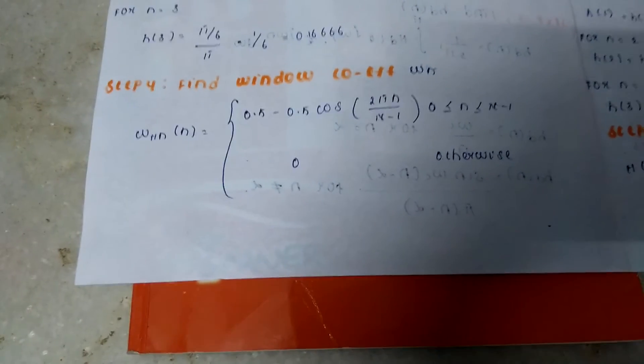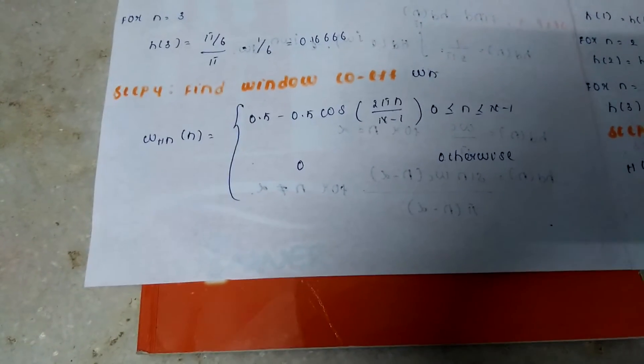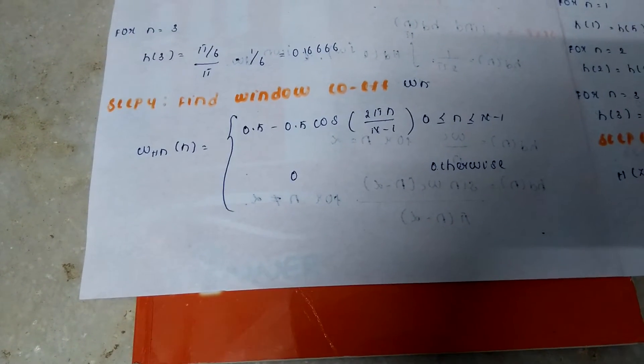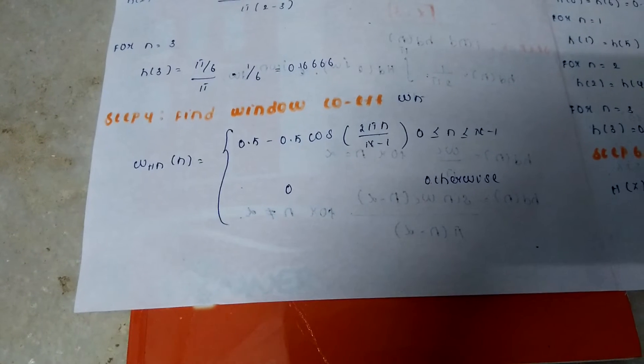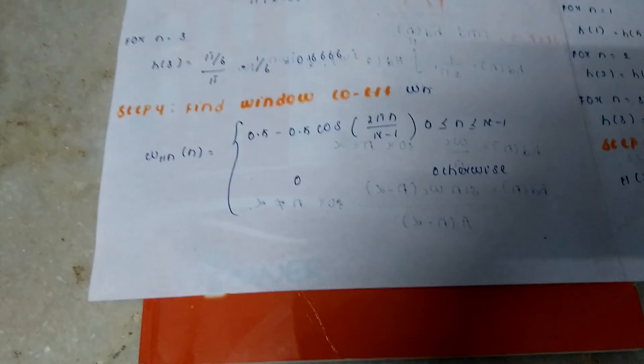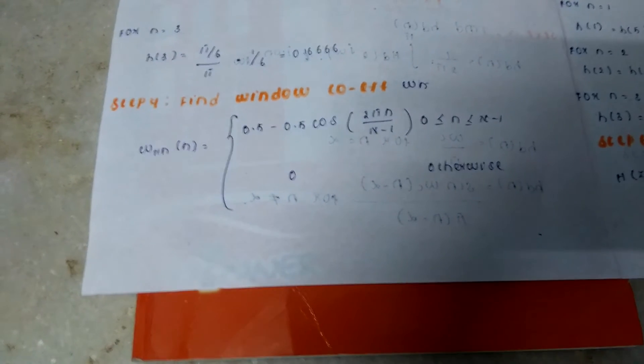Step 4 is to find the window coefficient, that is omega of n. Here the window given is your Hanning window, and the Hanning window formula is ω_h(n) = 0.5 minus 0.5 cos(2πn/(n-1)).